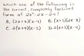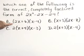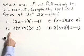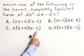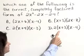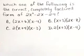Which one of the following is the correct completely factored form of 2x squared minus 2x minus 24? We've got option A, which is 2x plus 6 times x minus 4. Option B, x plus 3 times 2x minus 8. Option C, which is 2 times x plus 4 times x minus 3. And option D, which is 2 times x plus 3 times x minus 4.